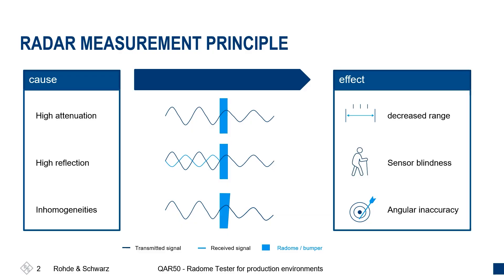Inhomogeneities would be like if I had engraved the Roland Schwarz logo on my glasses — I would always see the Roland Schwarz logo, which is completely annoying and would confuse me. It would do the same with the sensor. A vehicle that is actually in my lane might be detected in a different lane because of signal distortion caused by transmission through the inhomogeneous radome.